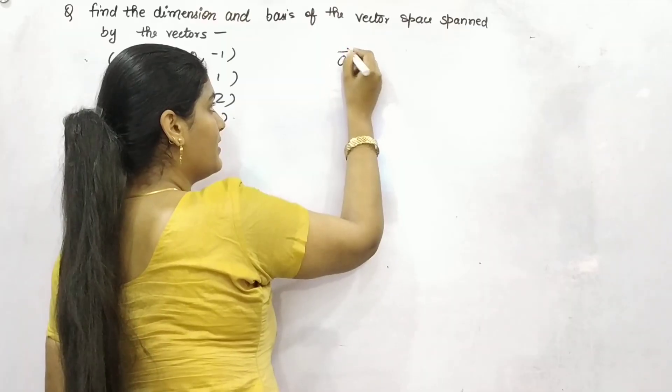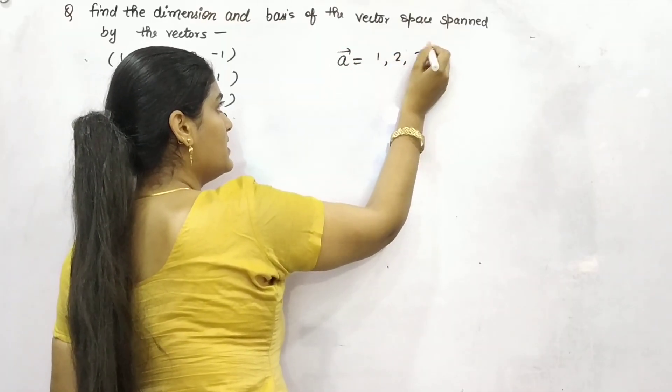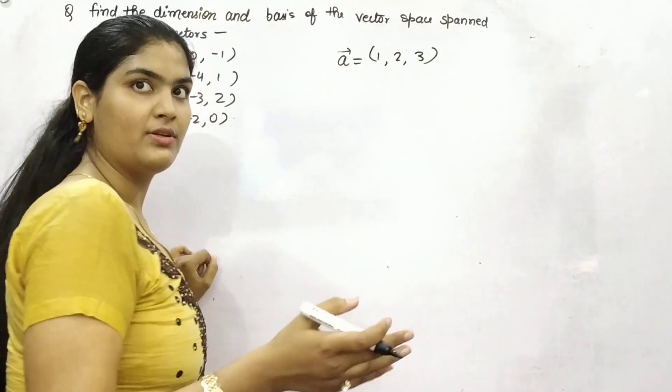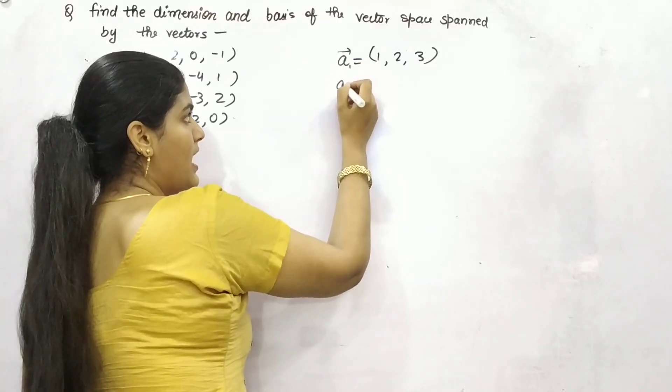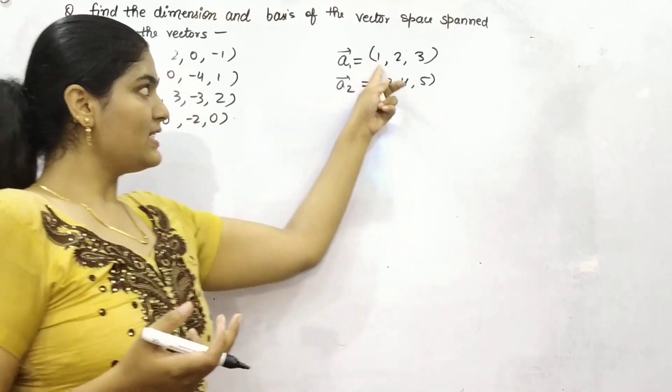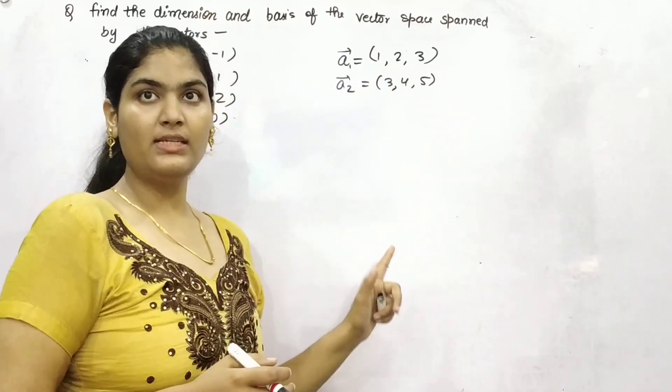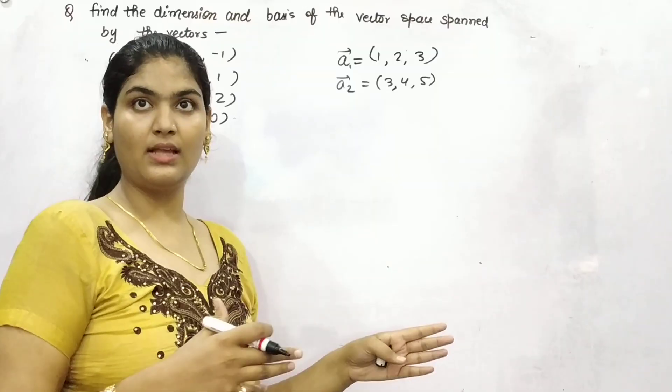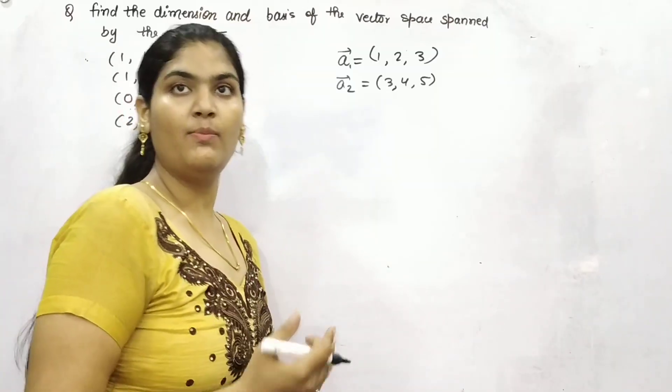Let's say you have a vector 1, 2, 3 in x, y, and z direction. Let's say it is a1, and you have another vector 3, 4, 5. So you can see there is no coinciding term, right? So these two vectors are linearly independent.